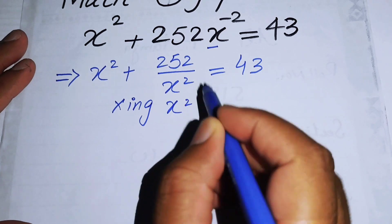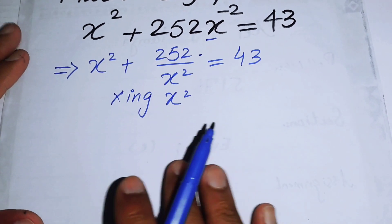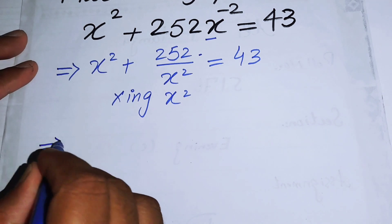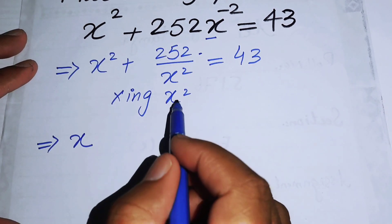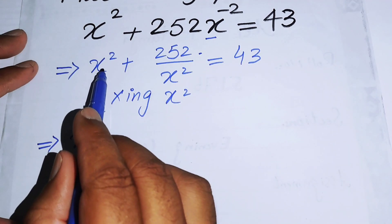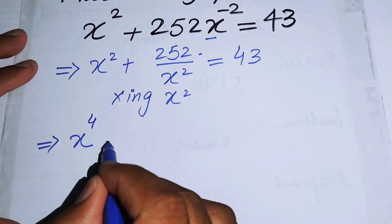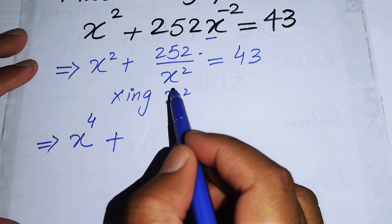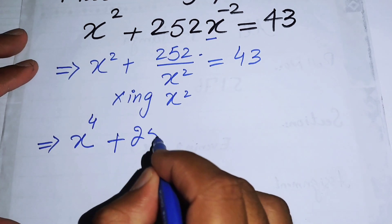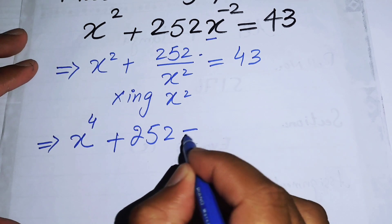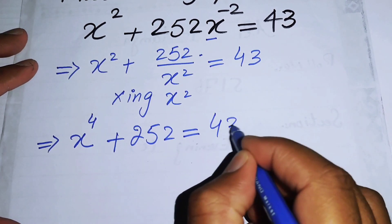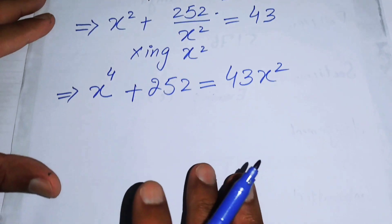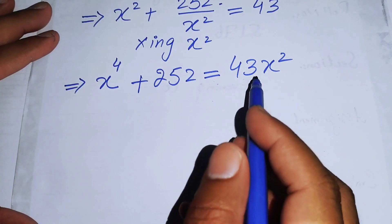After that I will multiply both sides by x² to remove this fraction. When x² multiplies x² it becomes x⁴, and when x² multiplies the fraction the x² terms cancel, giving us x⁴ + 252 = 43x².